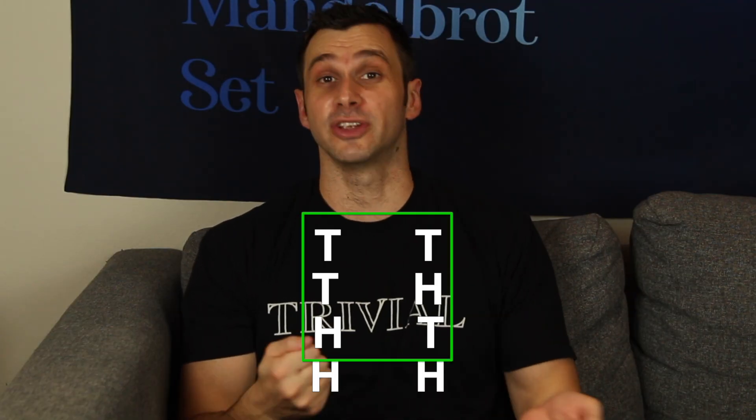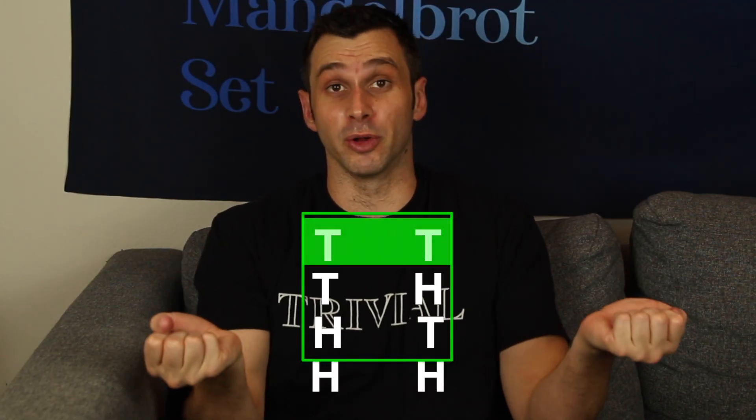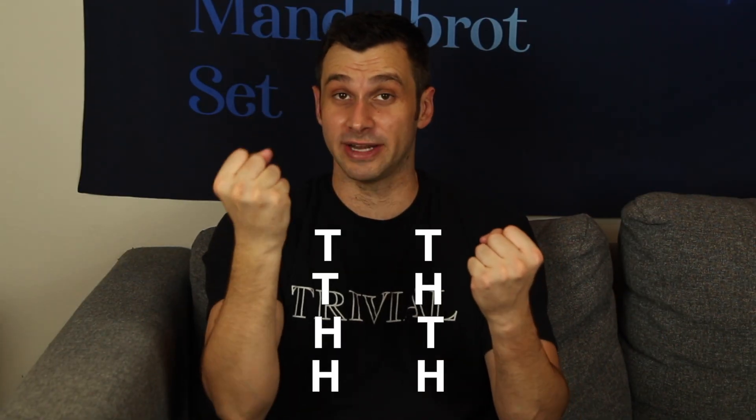Because once I say that at least one coin is tails, your sample space, which starts as four possibilities, goes down to three. One of those is tails-tails, so the odds that they're both tails is one out of three.